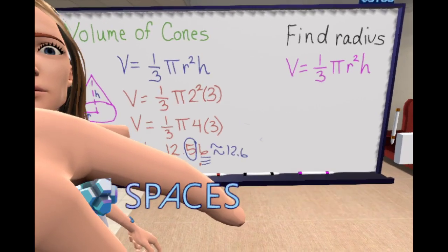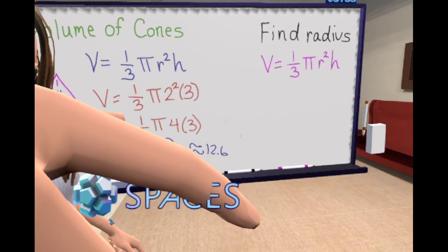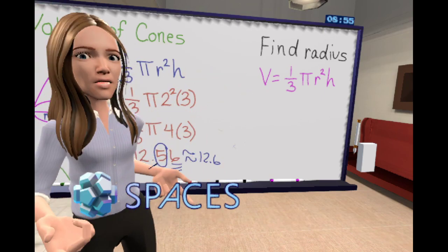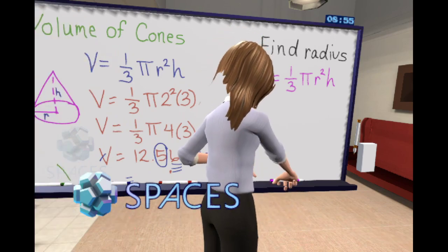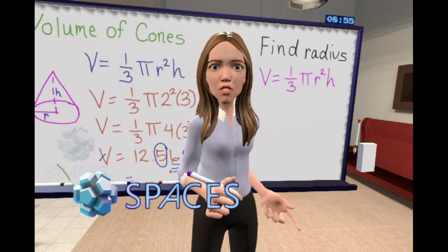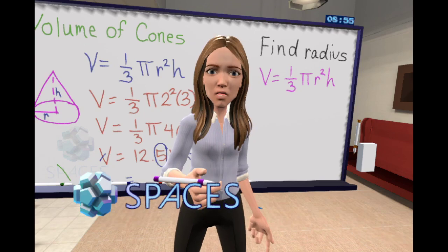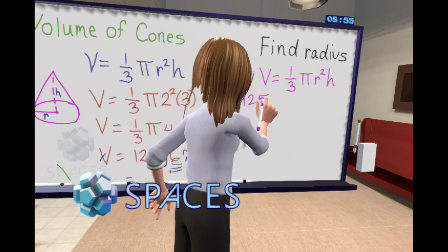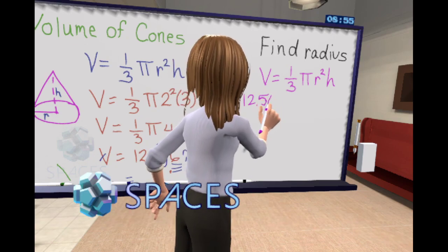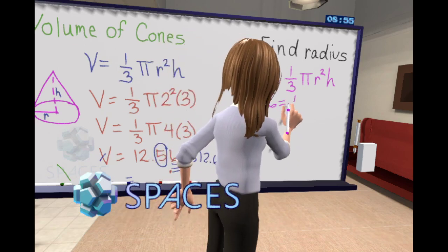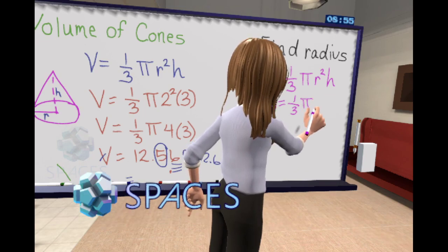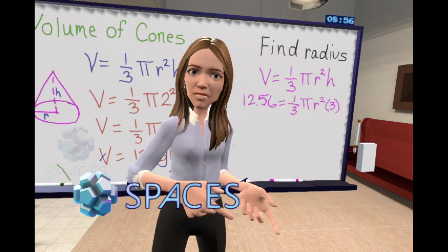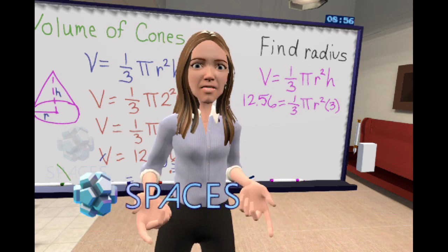That was volume of a cone. Now let's practice what would happen if we were finding radius. So if we were just finding radius and we use the equation that we just talked about. Let's say we don't know radius, but we do know our height is three and our total volume is 12.56. Let's walk through the steps on how we would find radius. So 12.56 equals one third times pi times r squared because we don't know what it is, and then times three.